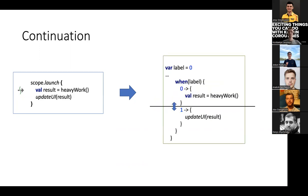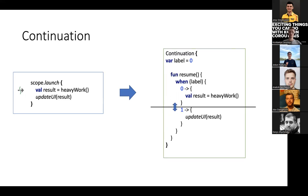Then the Kotlin compiler generates a kind of switch or when block in Kotlin for us, and also adds a label variable. This label saves information about which branch of the when block should be executed. Then the Kotlin compiler also generates a continuation class around our coroutine. Whenever we launch a coroutine, the continuation class is generated wrapping our coroutine code, and it contains a resume function that in turn contains the code we written in our coroutine, divided into several branches in the when block.